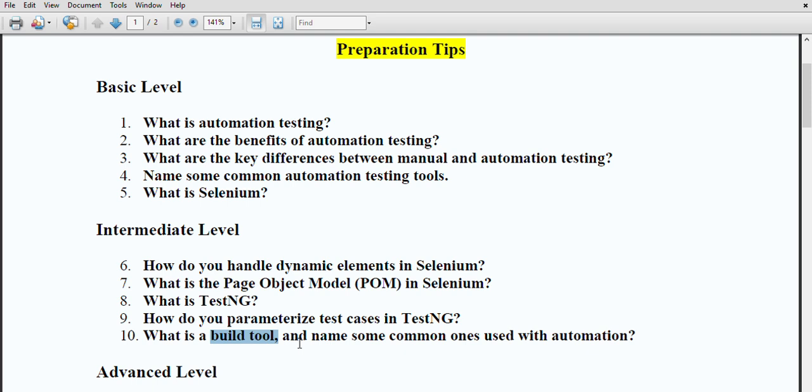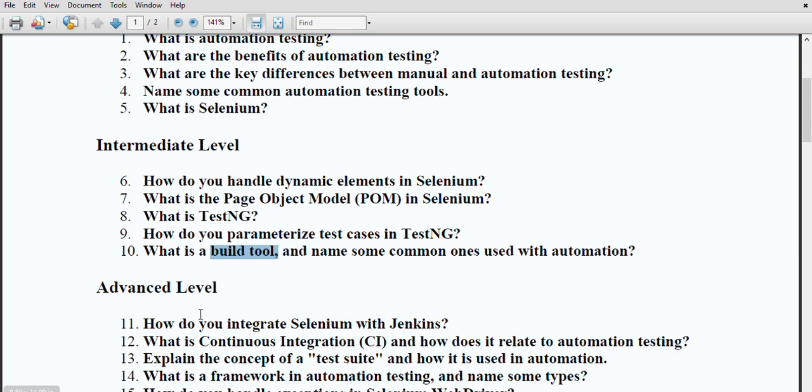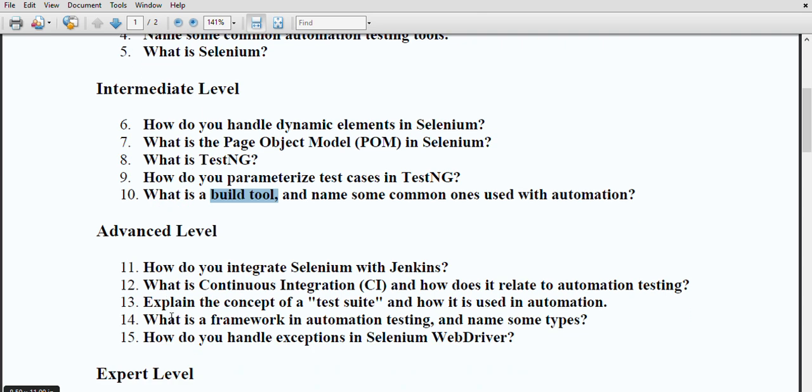The next is advanced level testing. Advanced level automation testing related questions are how do you integrate Selenium with Jenkins. Selenium tests can be integrated with Jenkins by setting up a Jenkins job that pulls code from the repository, then executes the test script and reports the result. Plugins like Selenium plugin or TestNG plugin in Jenkins help in managing and running the tests.